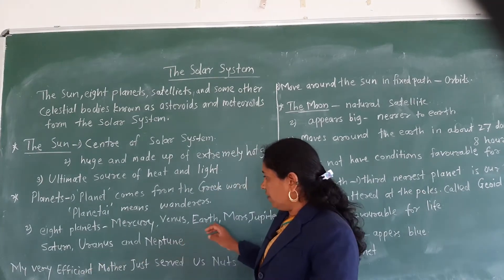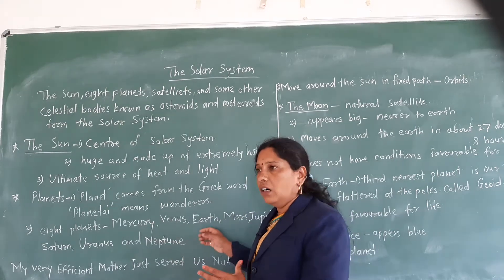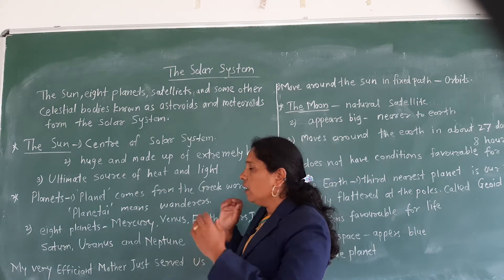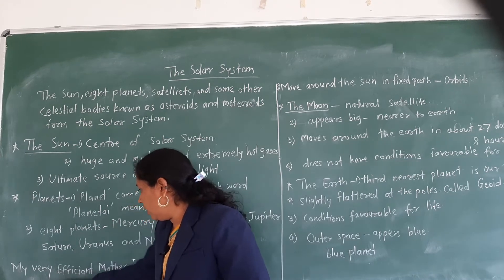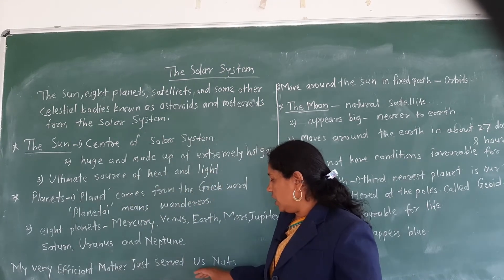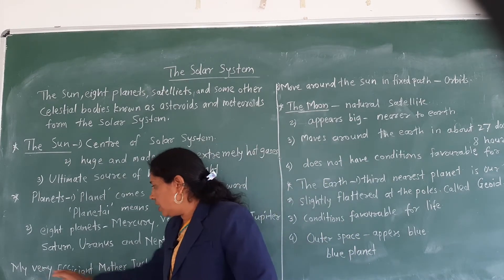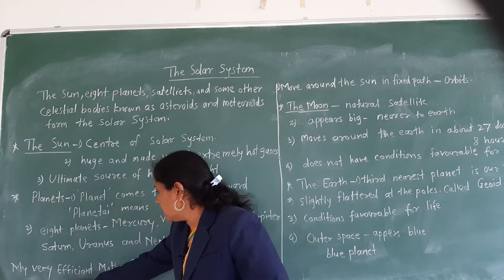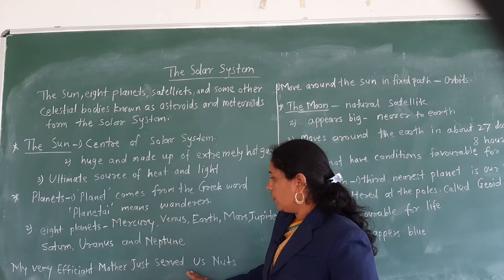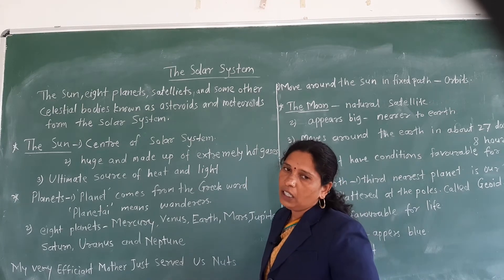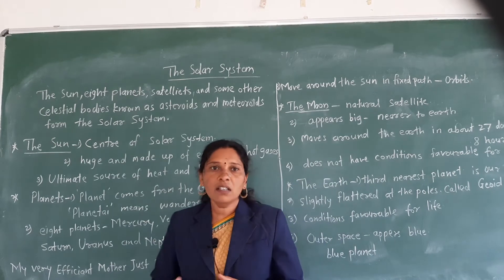These are ordered according to their distance from the sun. To remember the names of the planets, you can use a mnemonic sentence — take the first letter of each word: M for Mercury, V for Venus, E for Earth, M for Mars, J for Jupiter, S for Saturn, U for Uranus, and N for Neptune. So there are 8 planets in our solar system.